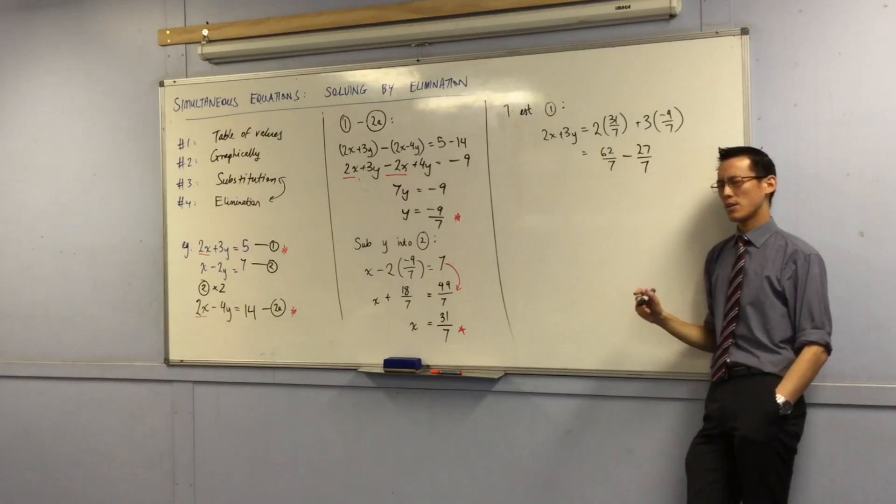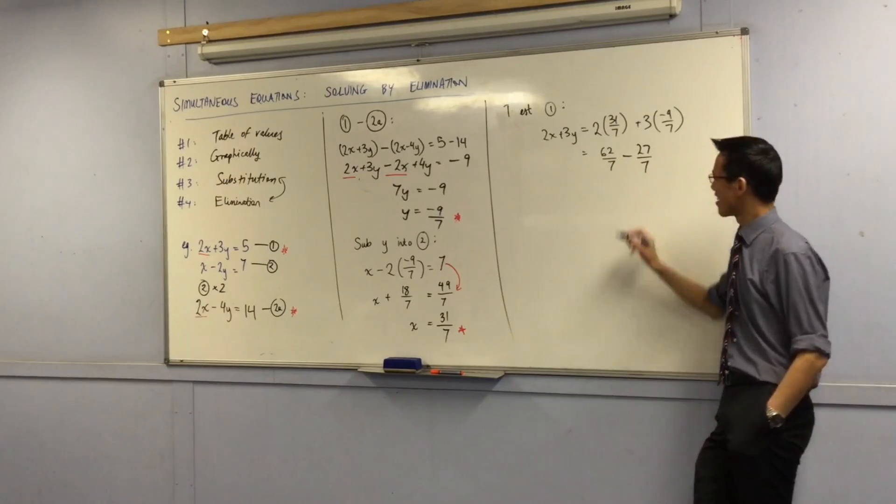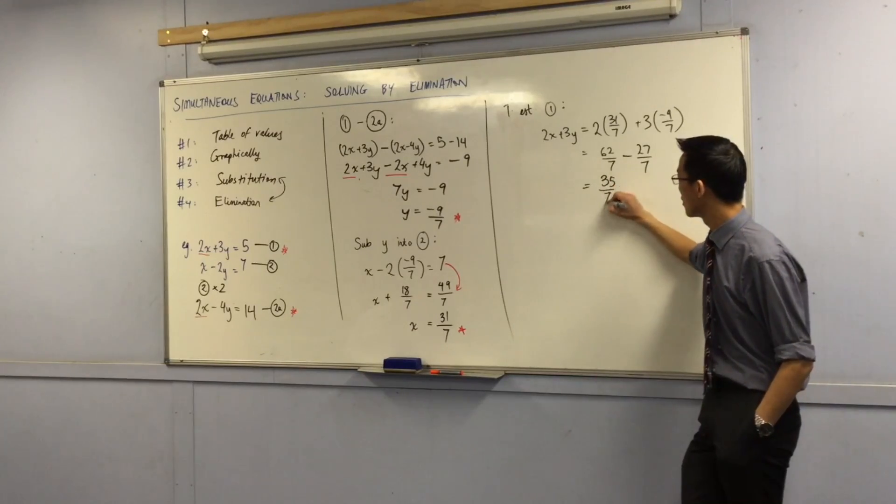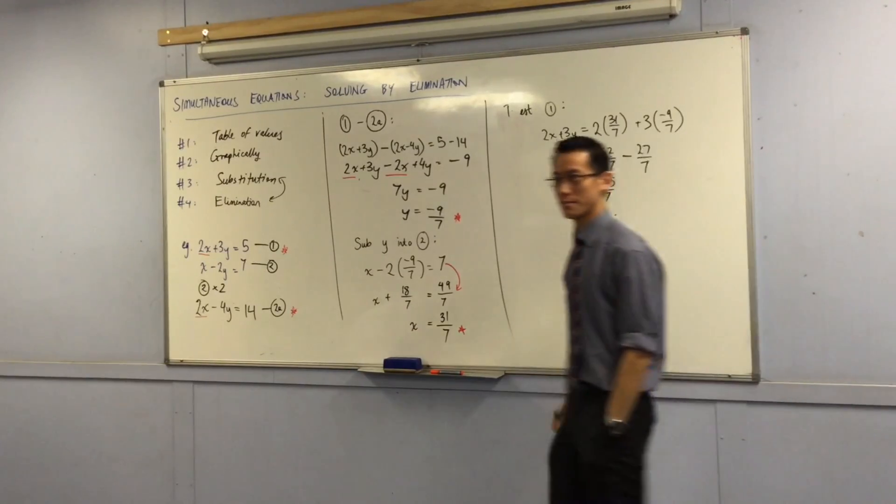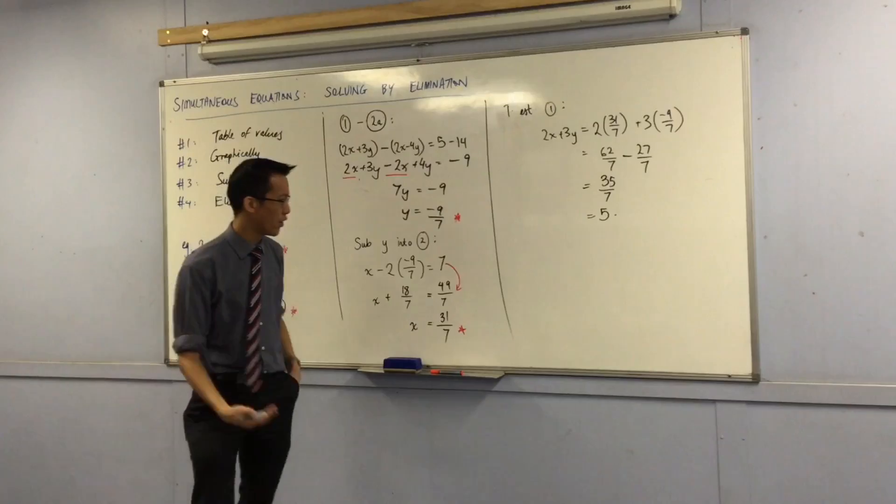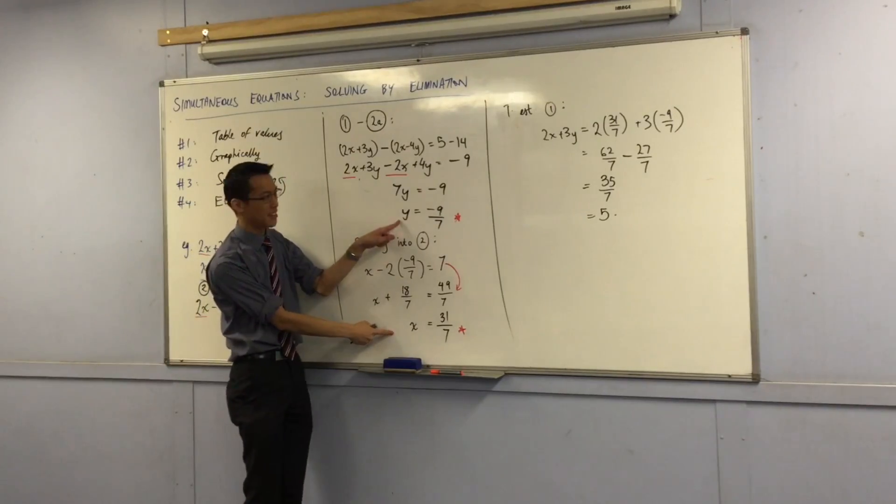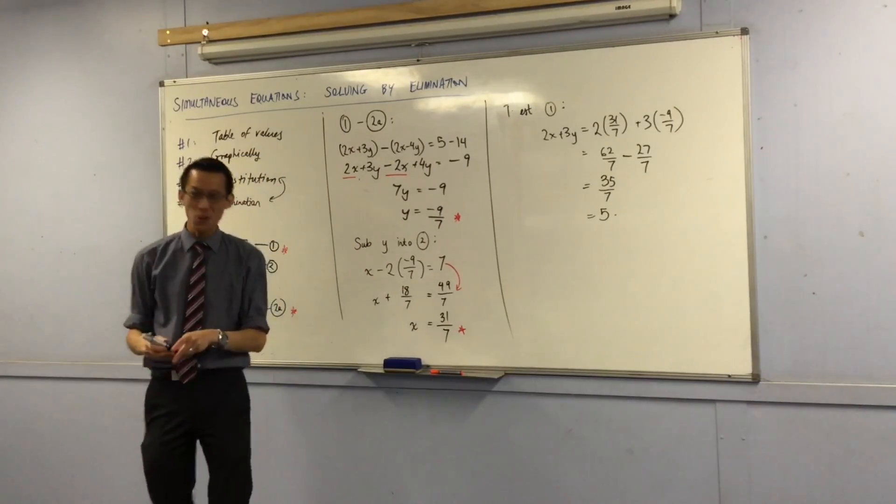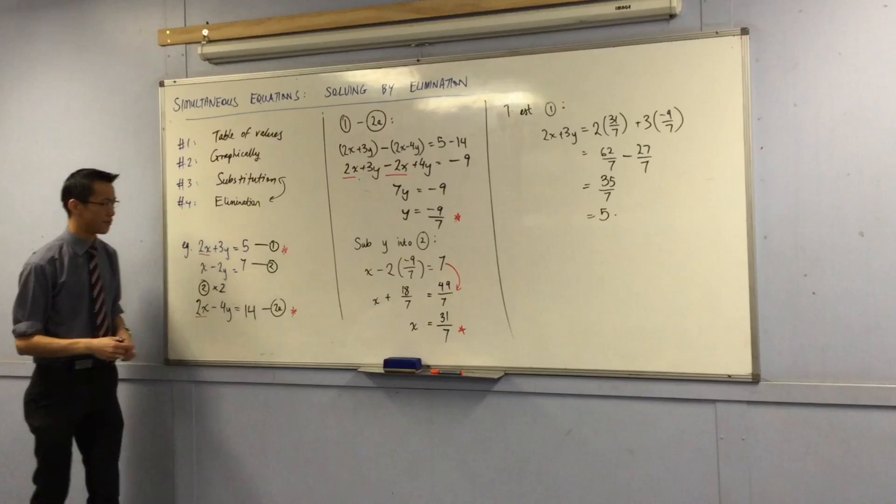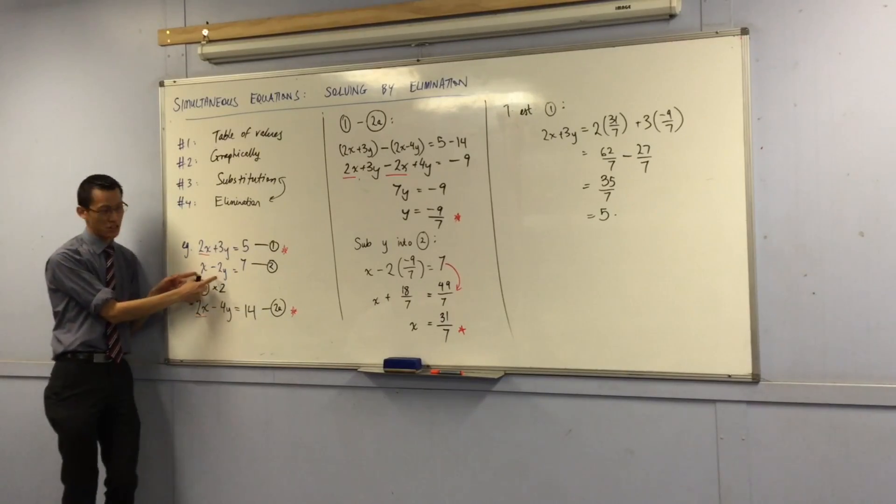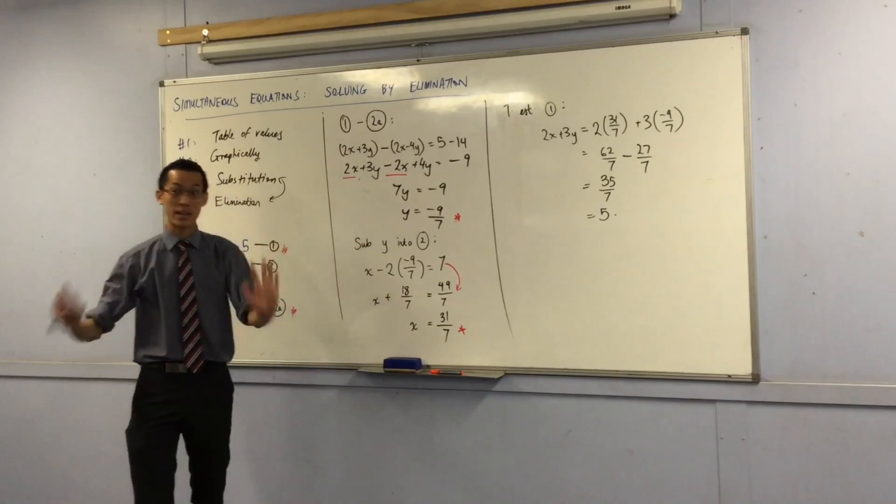62 take away 27. I'm pretty sure that's 35. Nailed it. So, even though it looked weird, well, the maths confirms it. And if you want, if you want to, like, double, triple, quadruple, sure, you can pop back into equation 2, but we've kind of already done that, so I'm satisfied. Okay?